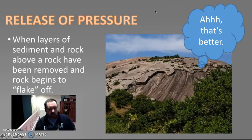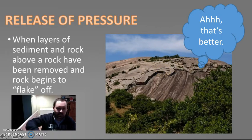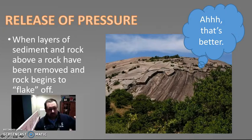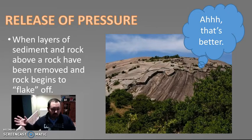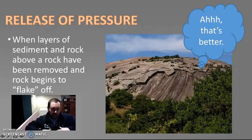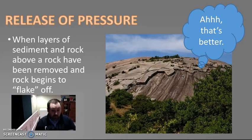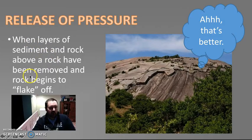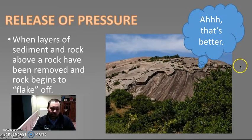Another kind of mechanical weathering is the release of pressure. Let's just suppose this area right here had tons and tons of earth on top of it — layers and layers of earth. And for one reason or another, those layers of earth got removed. They got eroded — they moved to a new location. Now this is almost like cracking its back — it's like it got all that pressure off of it. So it's starting to release some of the pressure that it had above it, and now it's starting to flake off. When layers of sediment and rock above have been removed, the rock begins to flake off.